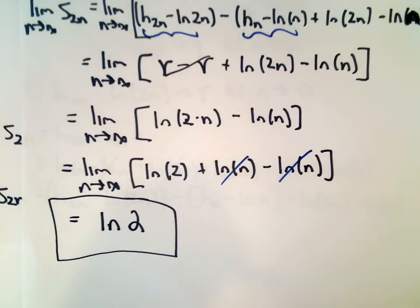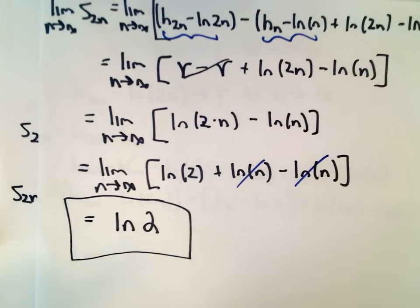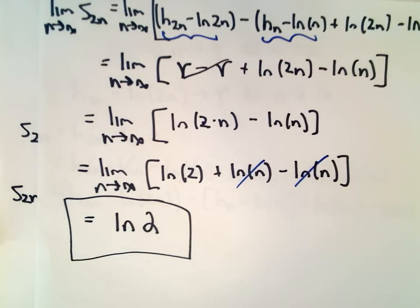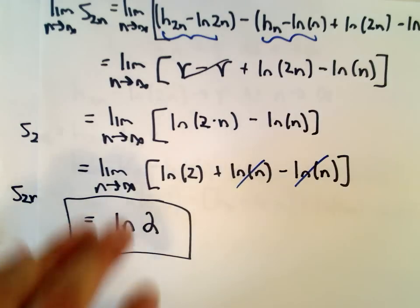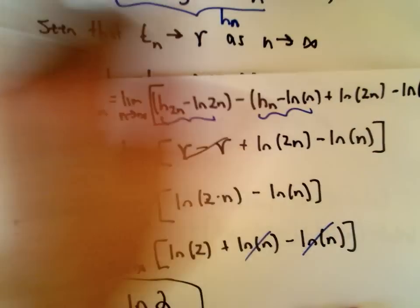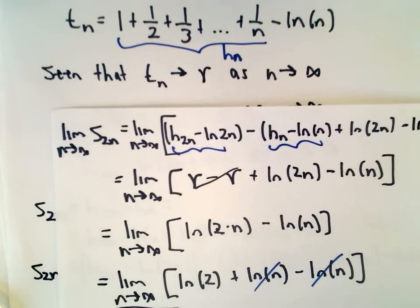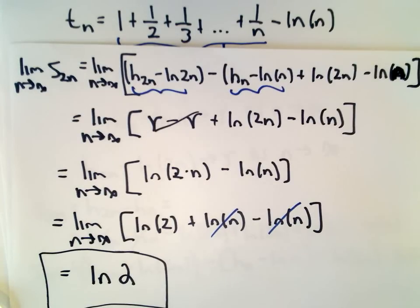And there we have it — proof complete. The alternating harmonic series does converge, and it converges to the natural logarithm of 2. I hope this video was interesting to you. We used a couple of results: the one about Euler's constant — feel free to check that out — and if you need more help on proof by induction, check out those videos as well.